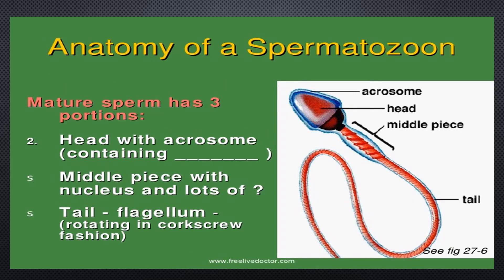The anatomy of the spermatozoon: the mature sperm has three portions. First, the head with the acrosome. In mammals such as humans, the acrosome contains degradative enzymes like hyaluronidase and acrosin. These enzymes break down the female ovum membrane to allow fertilization.